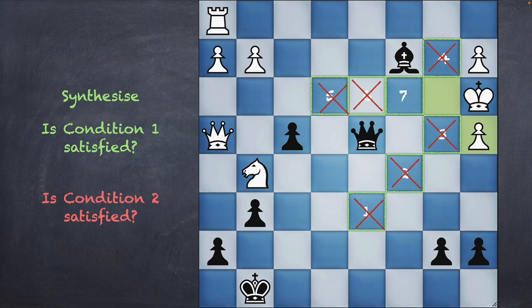Queen moves to square seven: you have a check — condition one is satisfied. Can the king go anywhere? No, absolutely not. All five squares around him are either blocked or controlled, and therefore it is checkmate by definition. This is how certain you can be about the problem.